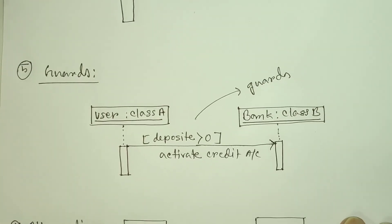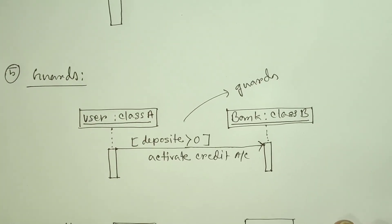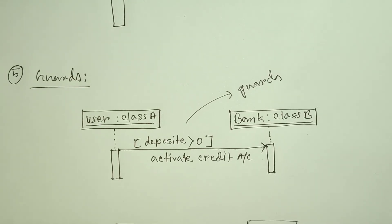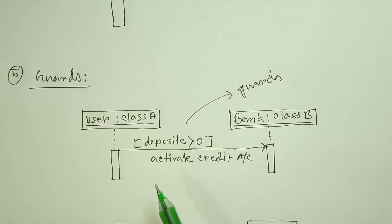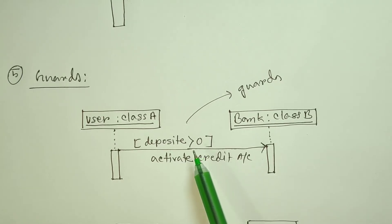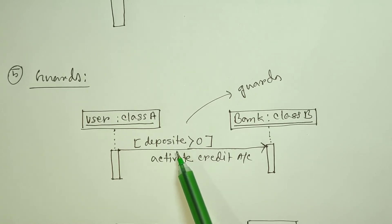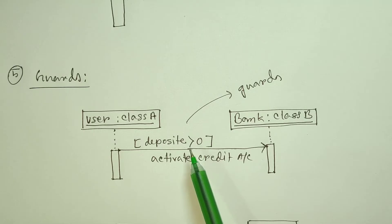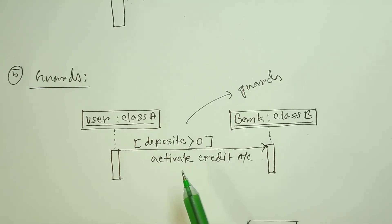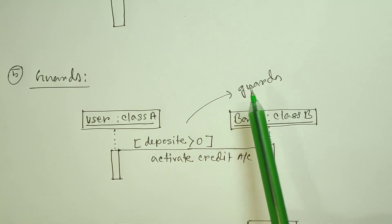Next, you will be able to know the guards. Guards represent a condition. When the condition is not fulfilled, you will not be able to execute the class. The user is the bank account — we have to activate the credit account. There is a minimum amount of deposit. If you have a deposit account, you will be able to save money. The amount of deposit condition is zero, and this condition is called a Guard.